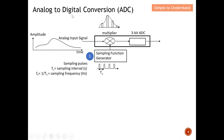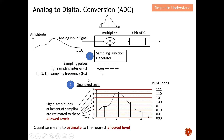Let's understand the process of analog to digital conversion. In Parts 1 and 2, I gave some ideas on how to implement ADC. To quickly summarize: the first step is sampling — deciding how many samples to take from the analog signal. The second step is quantization, which means estimating the signal to the nearest allowed level.